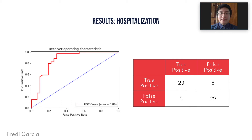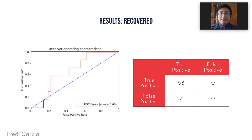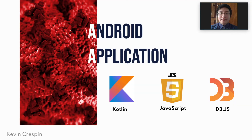For recovery: the area under the curve determined the model was 66% correct in classifying. The accuracy of the model was 89%. The confusion matrix showed that 58 cases were correctly classified as true positive, zero were misclassified as false positive, seven cases were misclassified as false negative, and zero were correctly classified as true negative. I will now pass it on to Kevin to talk about the Android application.